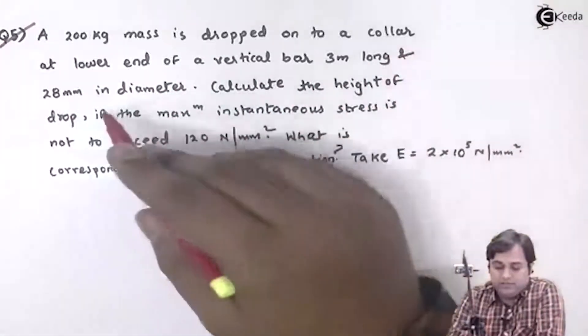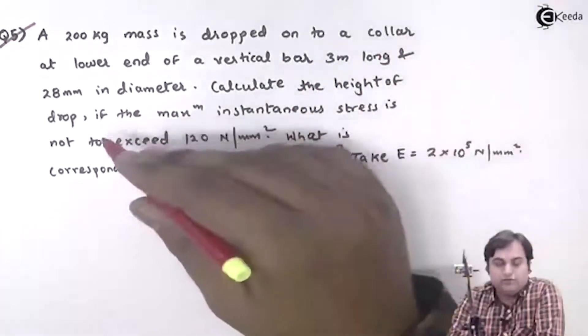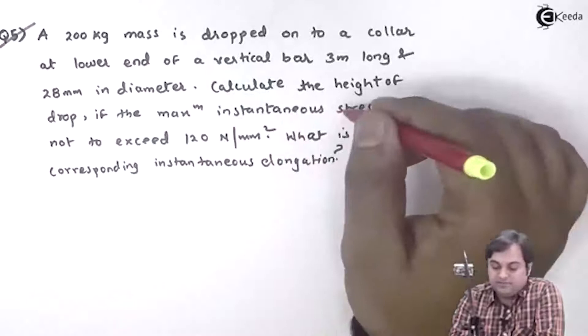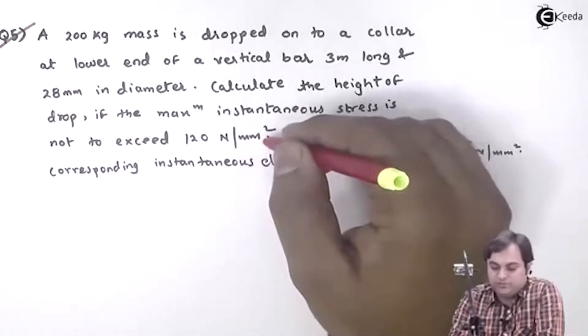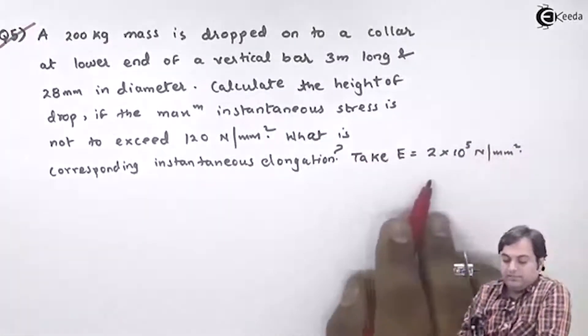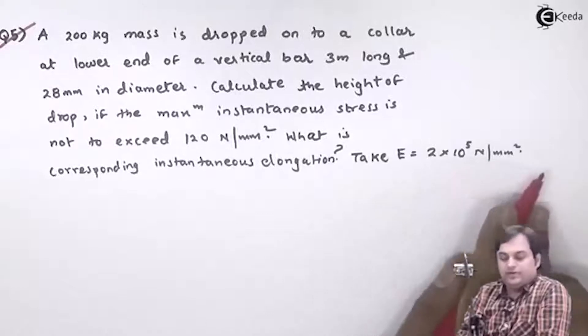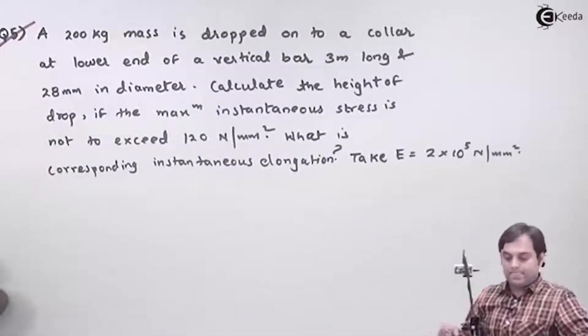3 meters long and 28 mm in diameter. Calculate the height of drop if the maximum instantaneous stress is not to exceed 120 N/mm². What is the corresponding instantaneous elongation? Take E = 2×10⁵ N/mm².